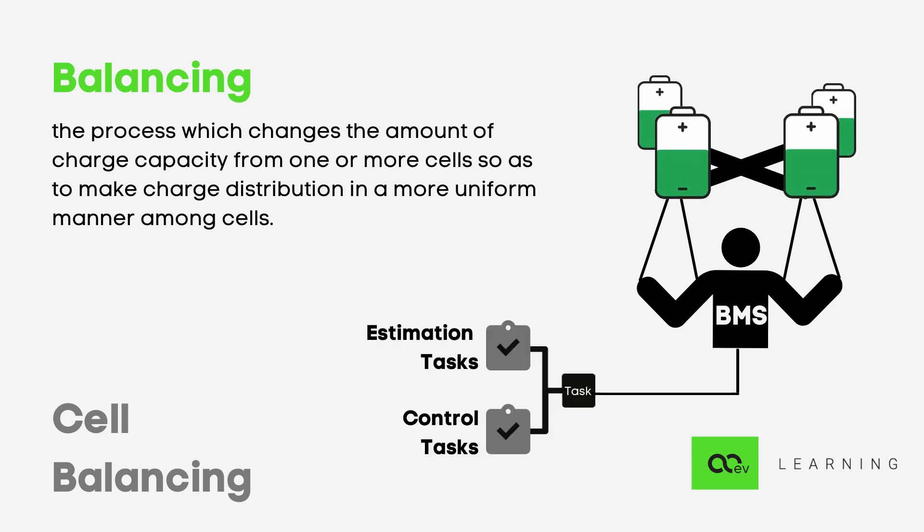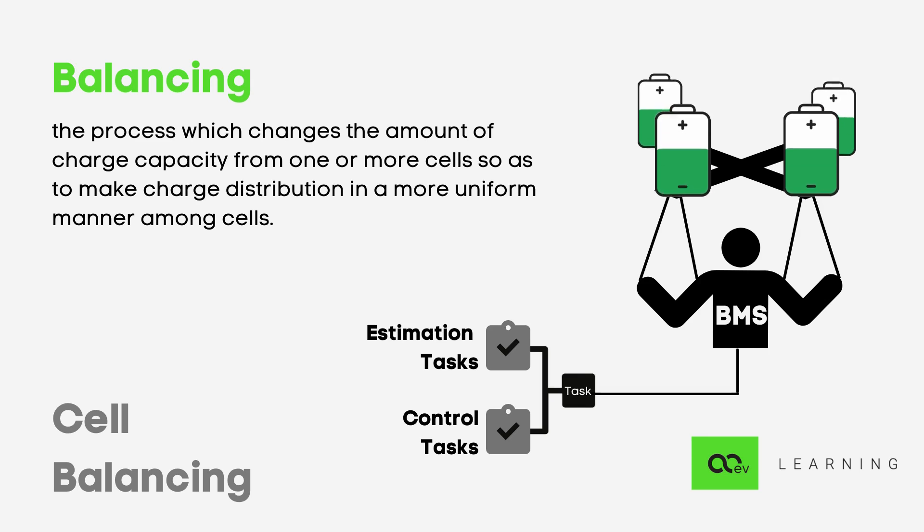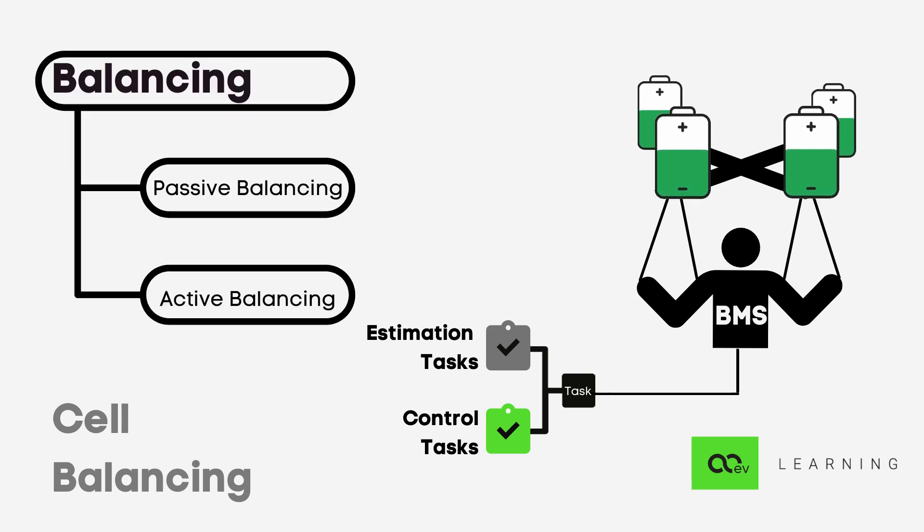BMS basically has two tasks: the estimation task and the control task. For now, we will discuss the control task. BMS generally uses two approaches for battery balancing: passive balancing and active balancing.